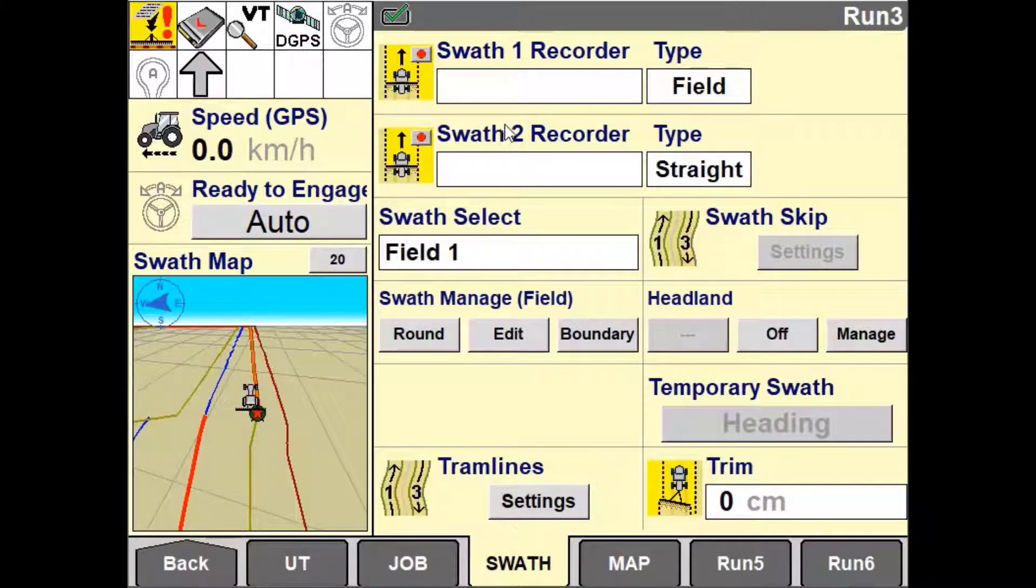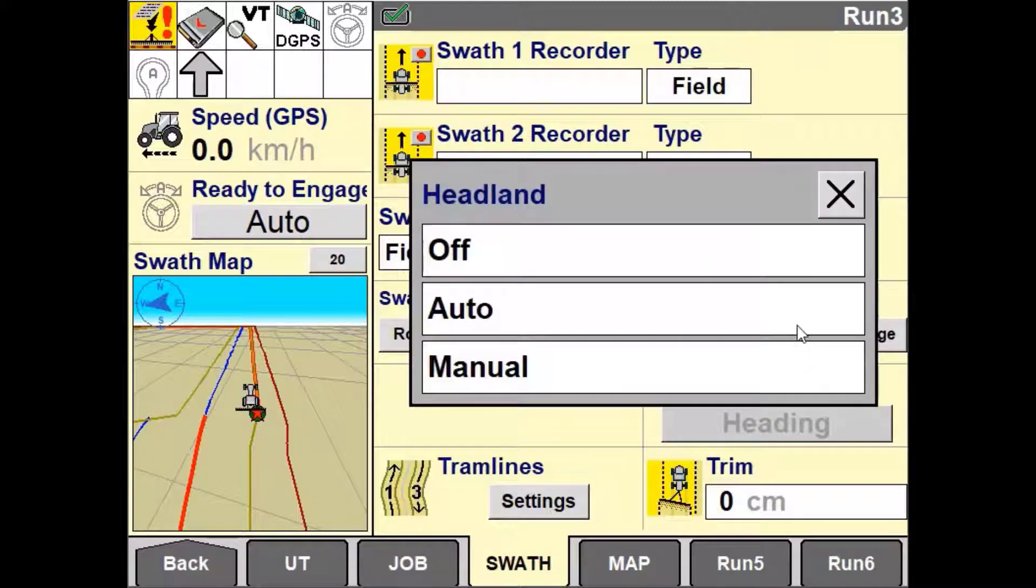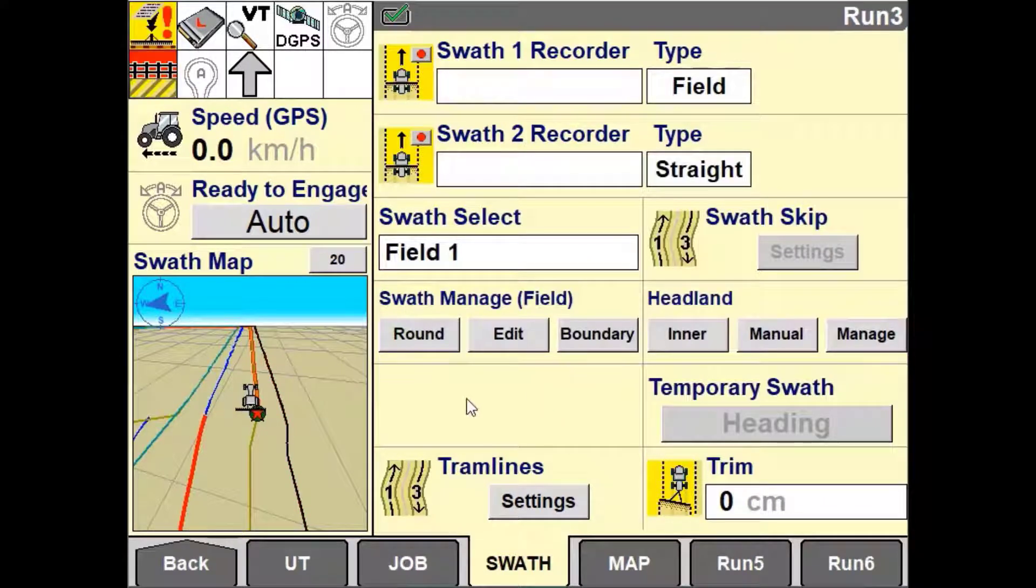The headland is typically where the vehicle turns and this defined point can be used to trigger actions such as end of row turns and automatic shut off of application control.